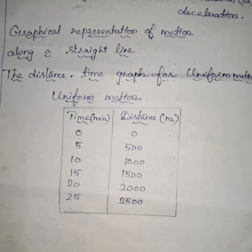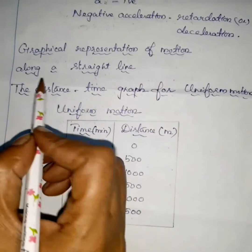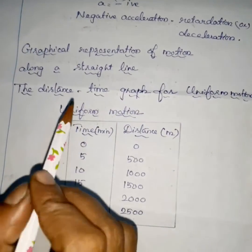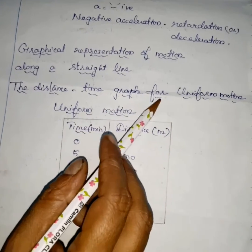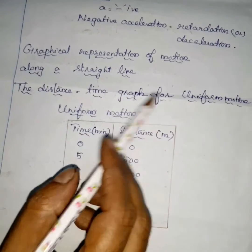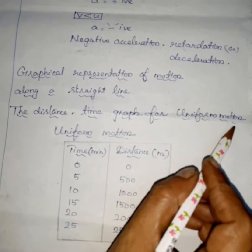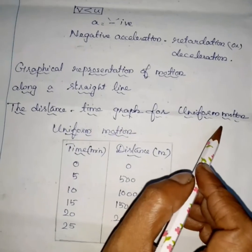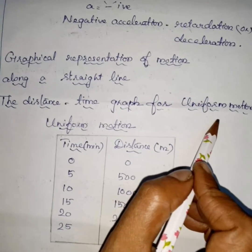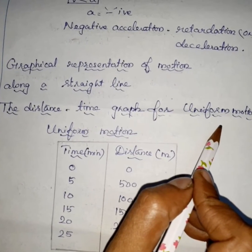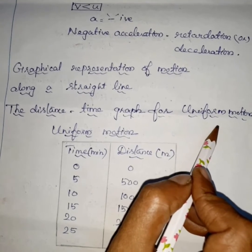Now we are going to study a very important topic: graphical representation of motion along a straight line. First, the distance-time graph for uniform motion. What is uniform motion? It covers equal distance in equal interval of time.